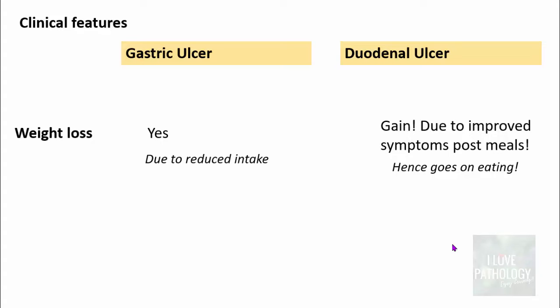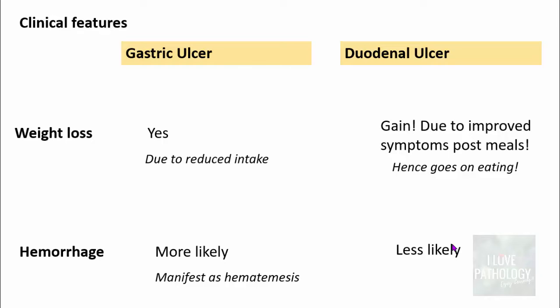Hemorrhage is most likely in gastric ulcers and less likely in duodenal ulcers. If hemorrhage occurs in gastric ulcer, it manifests as hematemesis. If there is hemorrhage in duodenal ulcer, it manifests as melena — that is, passage of black-colored stools.